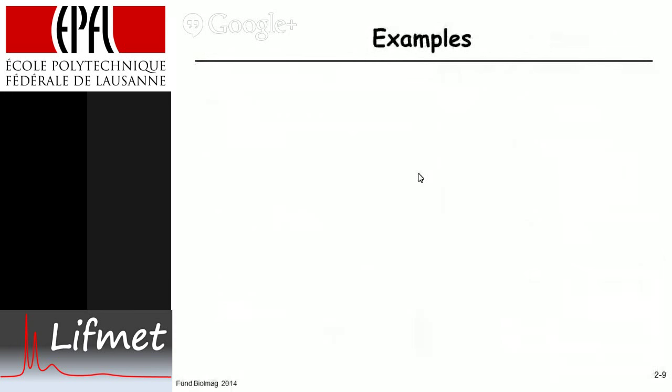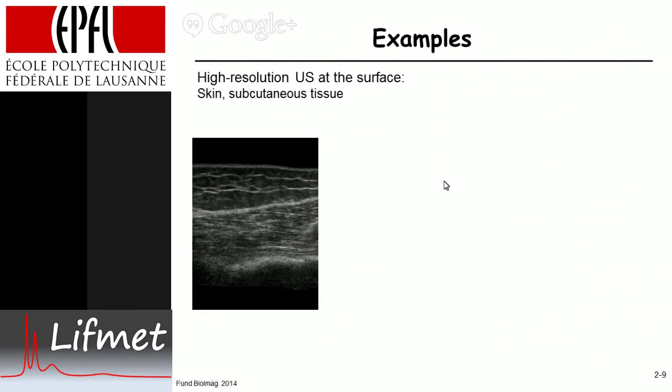Okay so now let's look at some examples that illustrate the principle. So the first one is the skin ultrasound, very high resolution. That's the problem with ultrasound, you have to know what you're looking at. What you see here is the epidermis, that's the surface, you have loose connective tissue and subcutaneous fat.